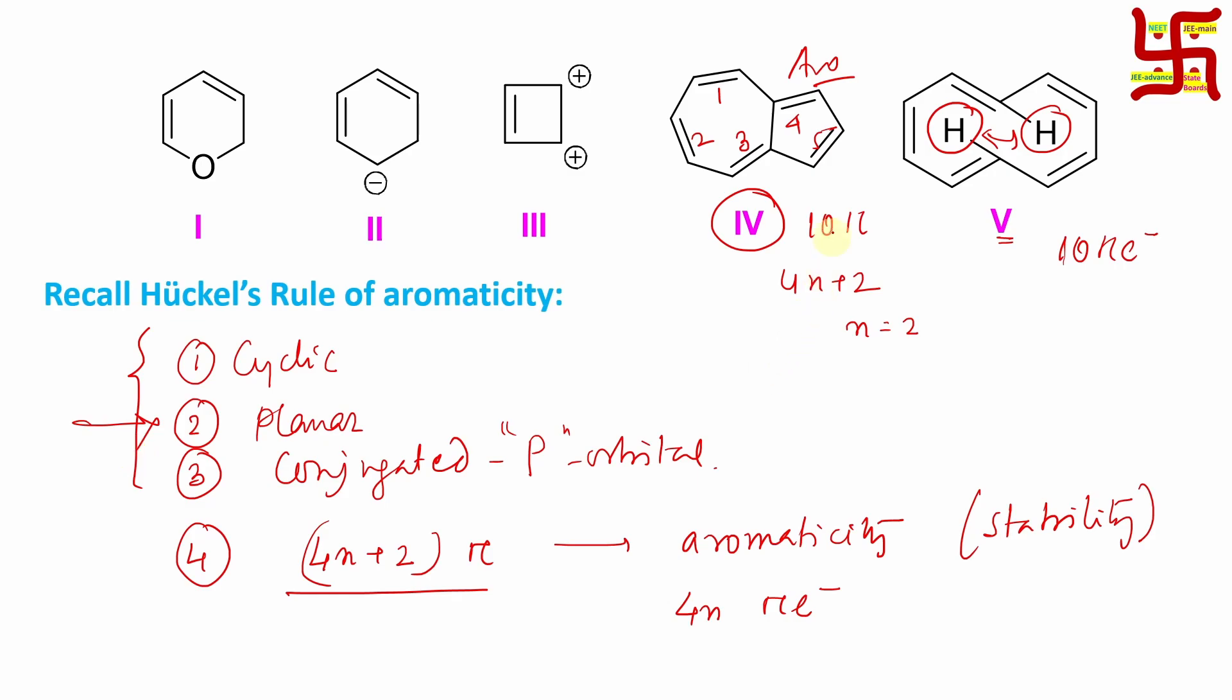If you look at option number 3, so this is positive charge. This is positive charge. Positive charge means there is a vacant p orbital, no electron. But if you look at here two electrons here. So it's cyclic, planar, conjugated, 4n plus 2 number of pi electrons where n value is actually 0. So this is also aromatic.